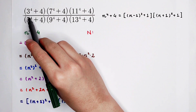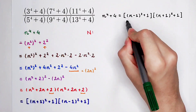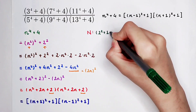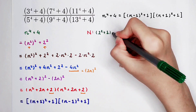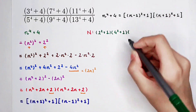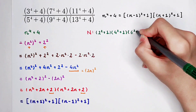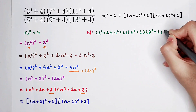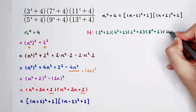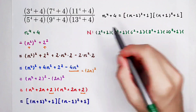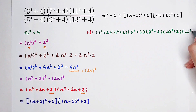3 to the power 4 plus 4: 3 minus 1 is 2, so it is 2 squared plus 1, times 3 plus 1 all squared plus 1, which is 4 squared plus 1. And then times: 7 minus 1 is 6, so 6 squared plus 1, times 7 plus 1 all squared — that is 8 squared plus 1. And then times: 11 minus 1 is 10, so 10 squared plus 1, times 11 plus 1 is 12, so 12 squared plus 1.